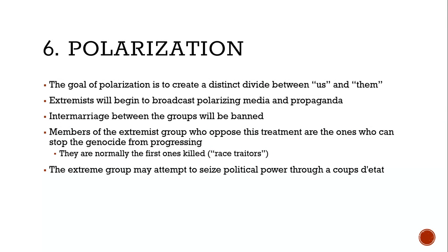This leads to stage six, polarization — when that distinct divide between us and them occurs. Extremists begin broadcasting polarizing media and propaganda, and intermarriage between groups is banned. Members of the extremist group who oppose this treatment are usually the ones who can stop the genocide from progressing, but they're also normally the first ones killed. When a government is ramping up toward genocide, they want to eliminate those moderates. Some of these stages can be hard to distinguish exactly, but it is a progression.